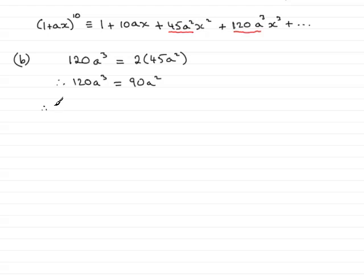So what we would have is 120a cubed minus 90a squared equals zero. And if I pull out a common factor now, that would be 30a squared. In the bracket, it would be 4a minus 3, which would equal zero.